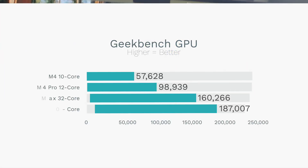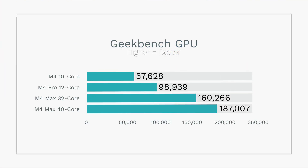Our Geekbench GPU tests are done and we got some impressive scores. The 32-core GPU scored 160,266 and the 40-core GPU scored 187,007. For reference, the M4 Pro with its 20-core GPU scored around 98,000, so it's good to see these numbers scaling linearly.